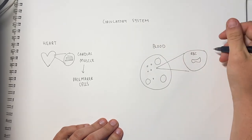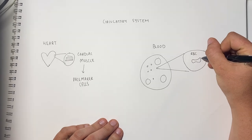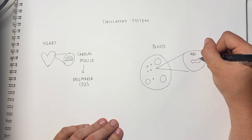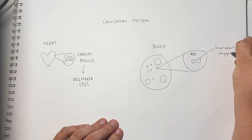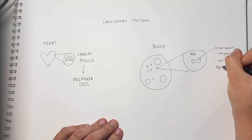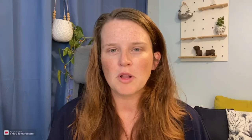Blood exists in a fluid matrix called plasma. Within the plasma there are red blood cells and white blood cells. Red blood cells have a specialized structure — they lack a nucleus and contain hemoglobin molecules. This molecule allows for the maximal absorption and transport of oxygen around the body. Hemoglobin is made up of four protein chains and a heme group, which is made of iron. Oxygen bonds to this heme group, meaning that the red blood cell is able to transport four oxygen molecules at a time.